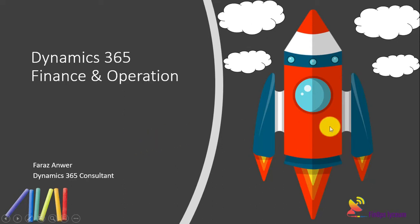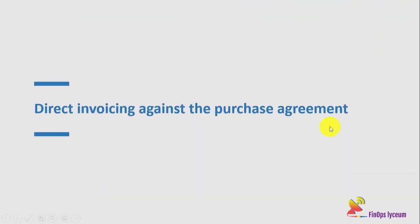Today I want to discuss a feature called direct invoicing, which is available in purchase agreements. This feature is very useful if you want to manage rental agreements using purchase agreements. You can create a rental agreement and then create invoices directly against that rental agreement without needing to create a purchase order. You can see a report showing a 12-month contract, how much you have invoiced, and the remaining amount.